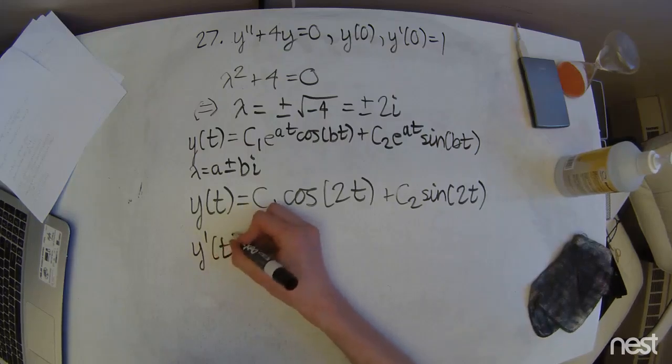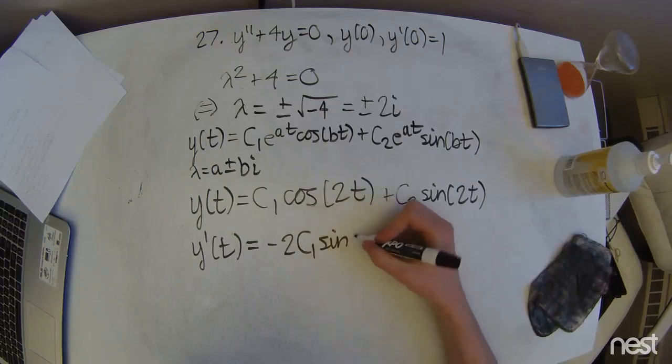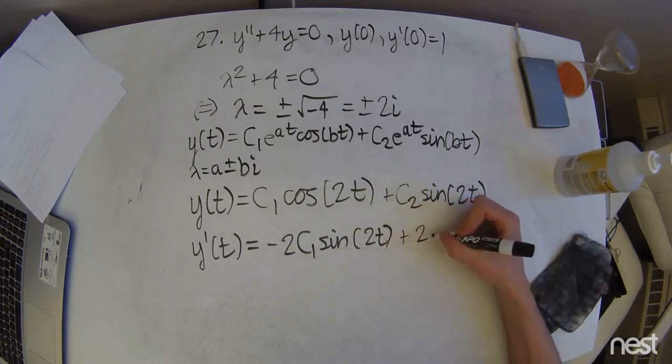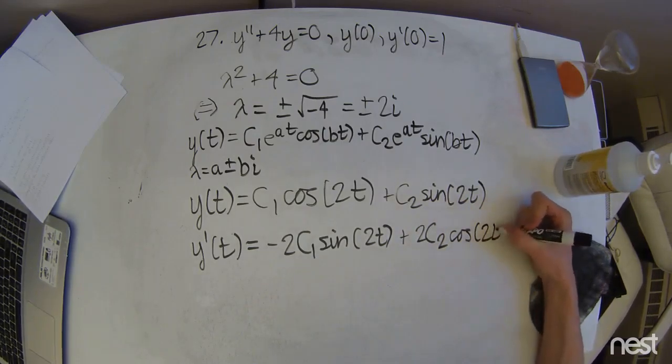So doing that, we get y prime of t equals negative 2c1 sine of 2t plus 2c2 cosine of 2t.